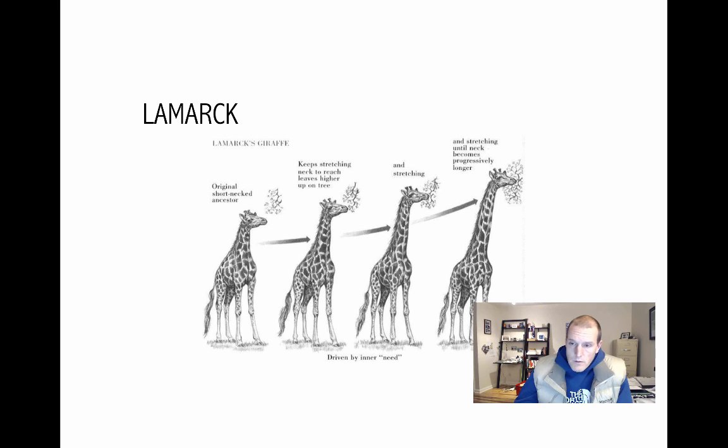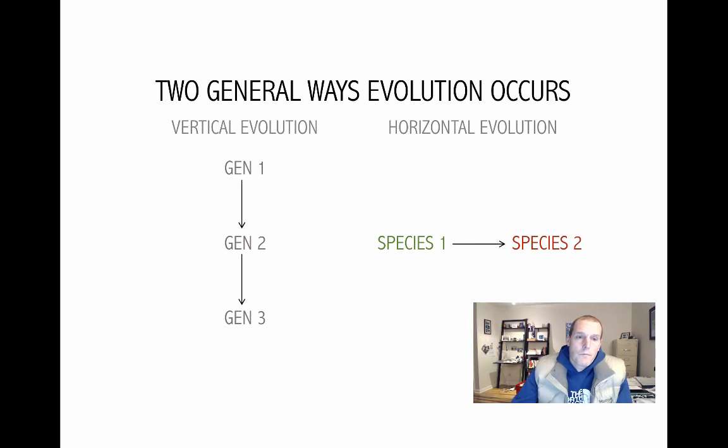So let's return to evolution according to Darwin and Wallace. And I'm talking only here about natural selection. I'm not really talking about the other mechanisms by which evolution can occur. You'll get to those in general biology, too. So there are two main ways in which evolution can occur, generally speaking.